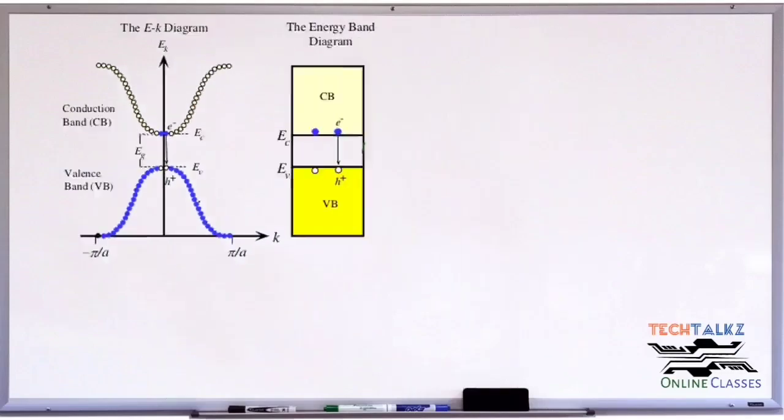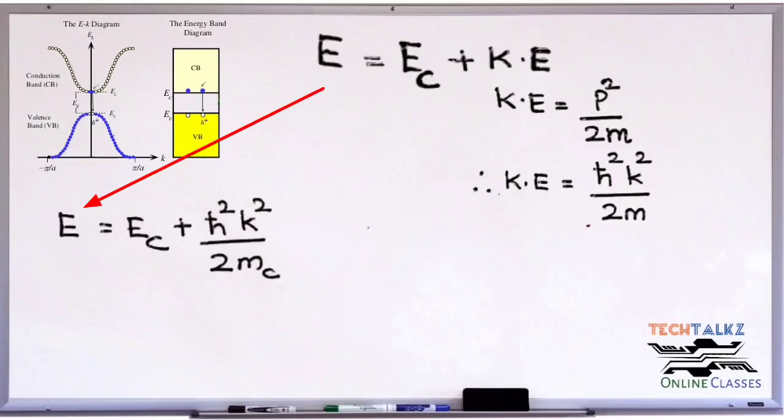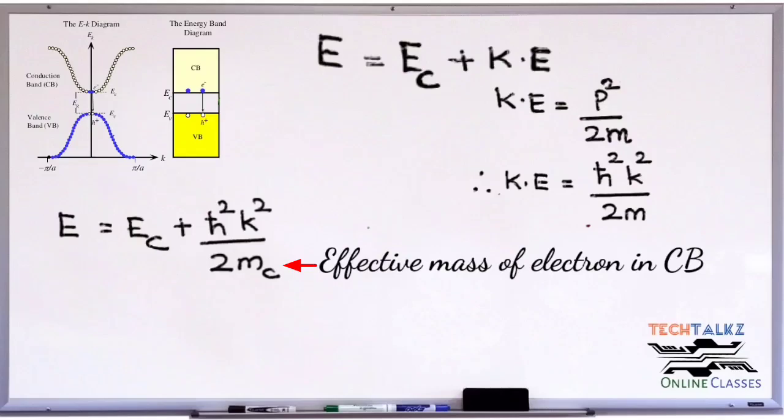In the conduction band, the energy of an electron is E equals EC plus kinetic energy. Kinetic energy is p squared divided by 2m. As p, the momentum, equals h cross into k, then kinetic energy will be h cross squared multiplied with k squared divided by 2m, where m is the effective mass of electron. So the energy of electron in the conduction band is E equals EC plus h cross squared multiplied with k squared divided by 2mc, where mc is the effective mass of electron in the conduction band. The energy E of electron is proportional to k squared, which is equivalent to the basic equation of a parabola, y equals x squared. This is called the parabolic approximation.